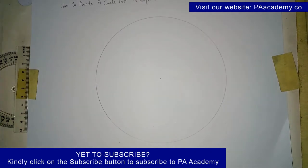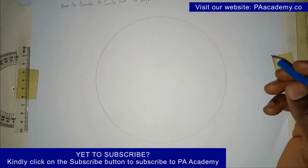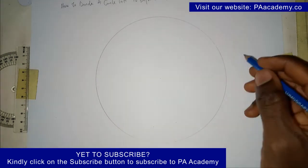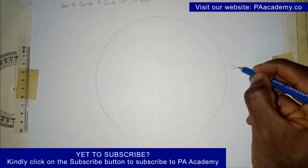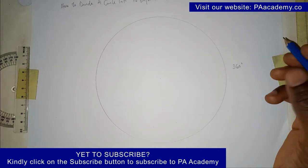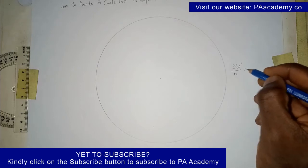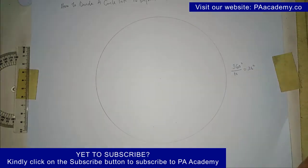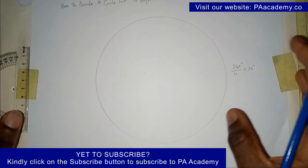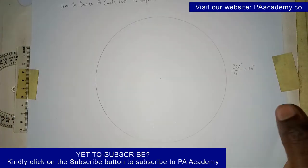To start with, when we look at a circle, the total angle in a circle is 360 degrees. If you have 360 degrees and we want to divide it into 10 equal parts, that would be 360 degrees divided by 10, which gives us 36 degrees. That means each part of the circle will be 36 degrees apart.